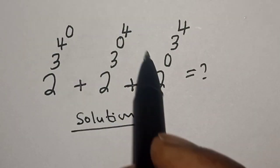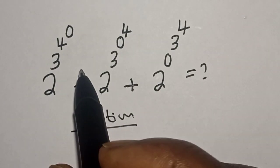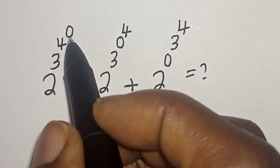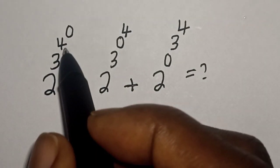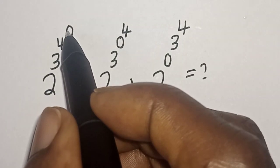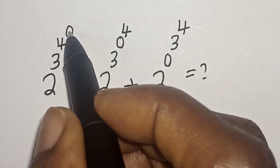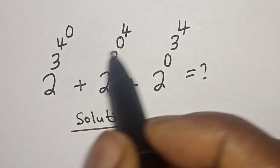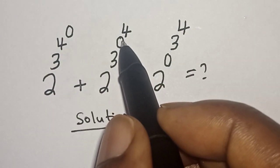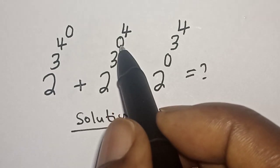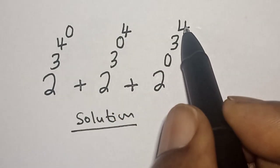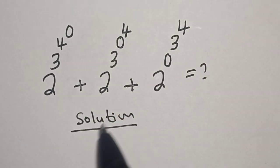Then what do we do first? We start from the top to the bottom. Then we work with the first 2, that is 0 and 4, then 4 and 0, and 4 and 3.